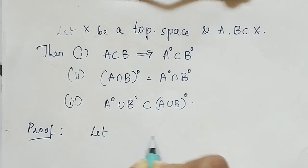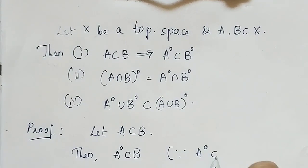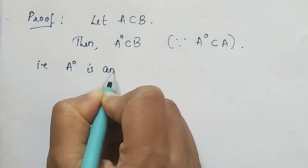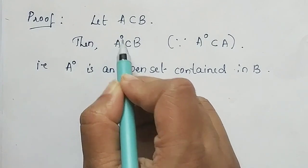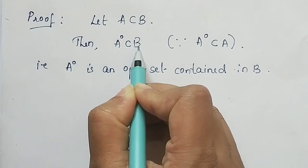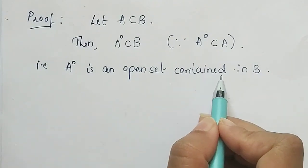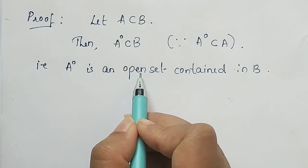In the hypothesis we are given A is a subset of B. By the definition of interior, A interior will be a subset of B, because A interior is always a subset of A — as proved in the last video. So A interior is an open set contained in B, since A interior is a subset of B, meaning B is the larger set. A interior is always an open set by the definition of interior.